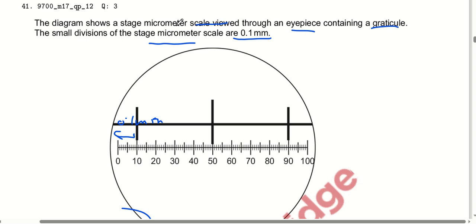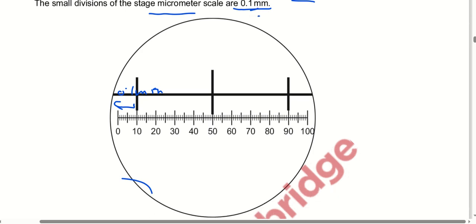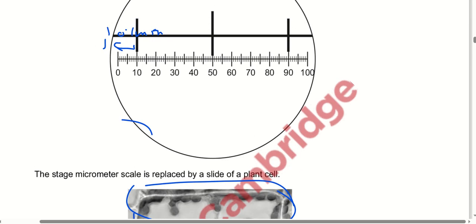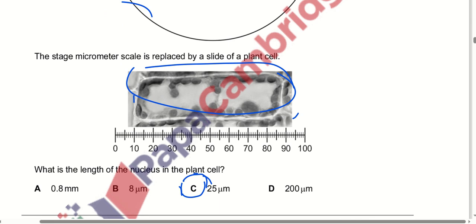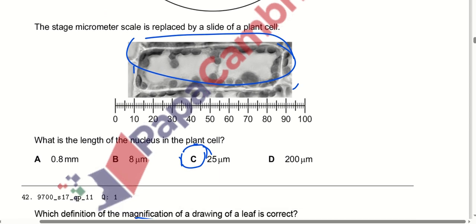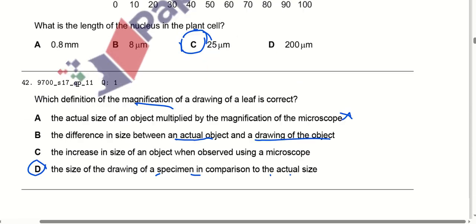The diagram shows a stage micrometer scale viewed through an eyepiece containing a graticule. The small divisions of the stage micrometer scale are 0.1 mm. The stage micrometer scale is replaced by a slide of a plant cell. The length of the nucleus in the plant cell comes out to be 25 micrometers.